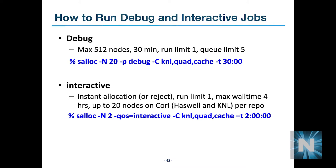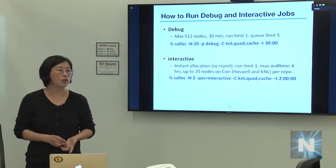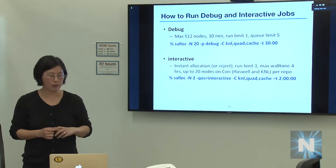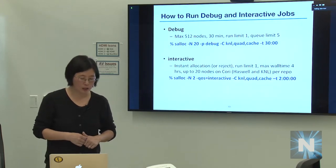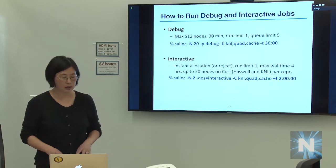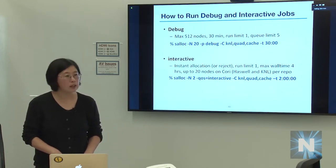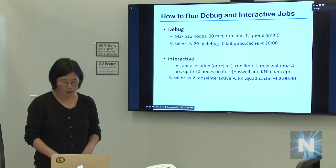For interactive and debug runs: the 'debug' partition allows up to 512 nodes for 30 minutes, with a limit of one running job and up to five queued jobs per user. The 'interactive' QoS allows up to 20 nodes per repo, up to 4 hours, with one job per user — but provides an immediate accept or reject response rather than queuing.